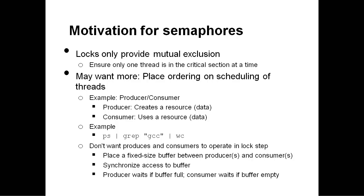This is very useful for things like making sure your bank balance gets updated, but doesn't solve all the problems we might want to solve. Another thing we really want to do is to place an ordering on how threads get scheduled, meaning we want some code in one thread to be guaranteed to run before another thread's code. A standard example of this is the producer-consumer problem we've talked about many times this semester.